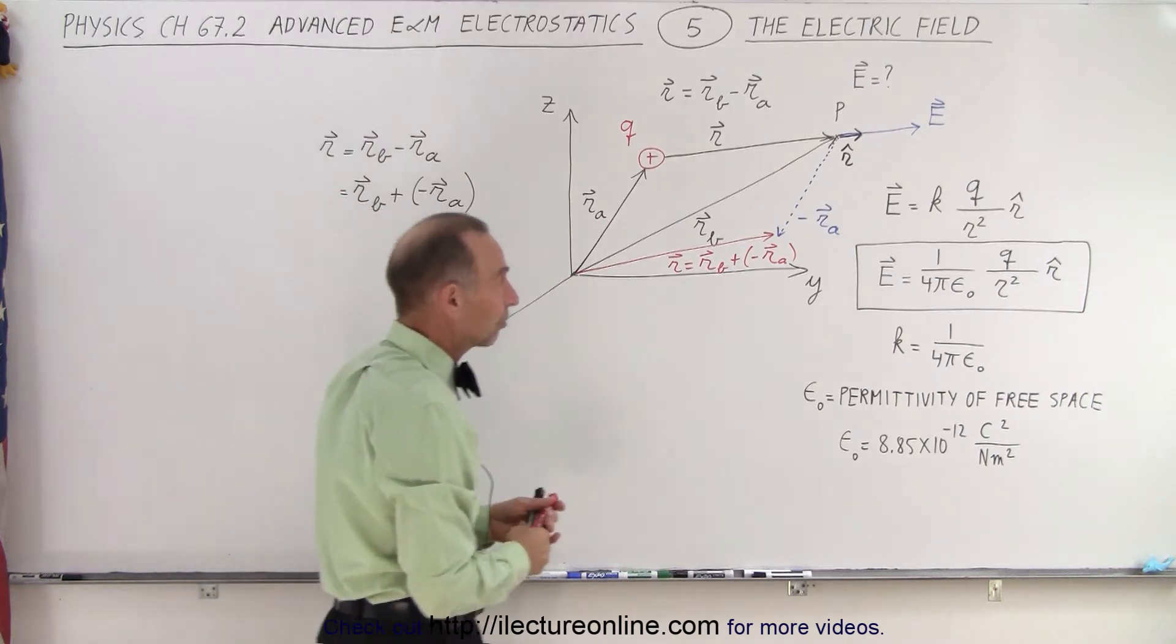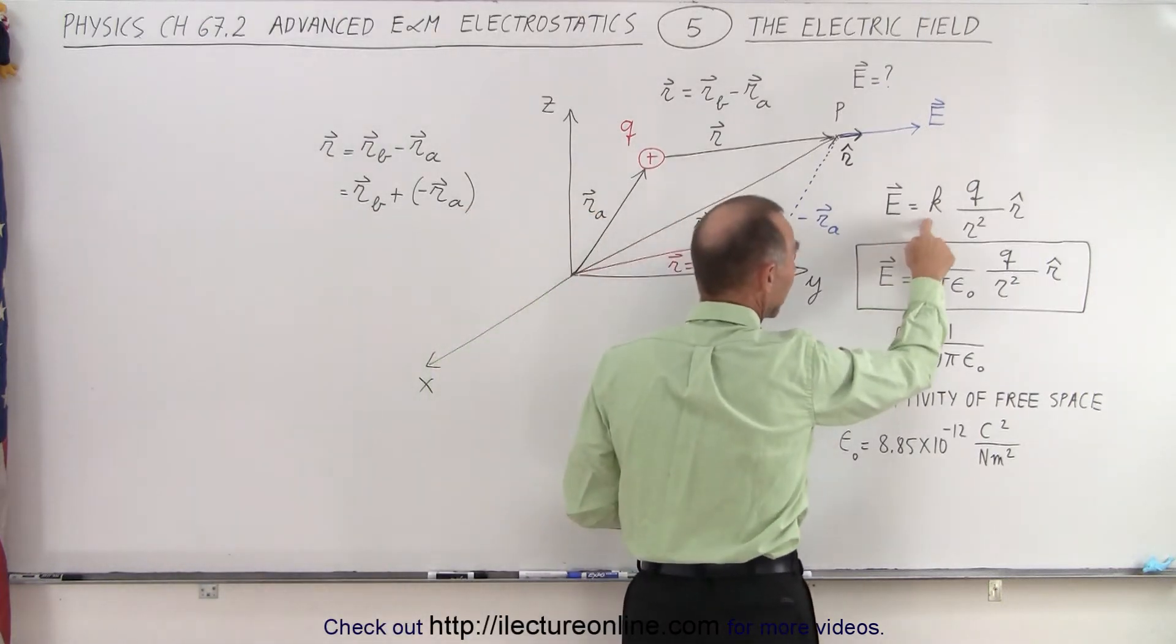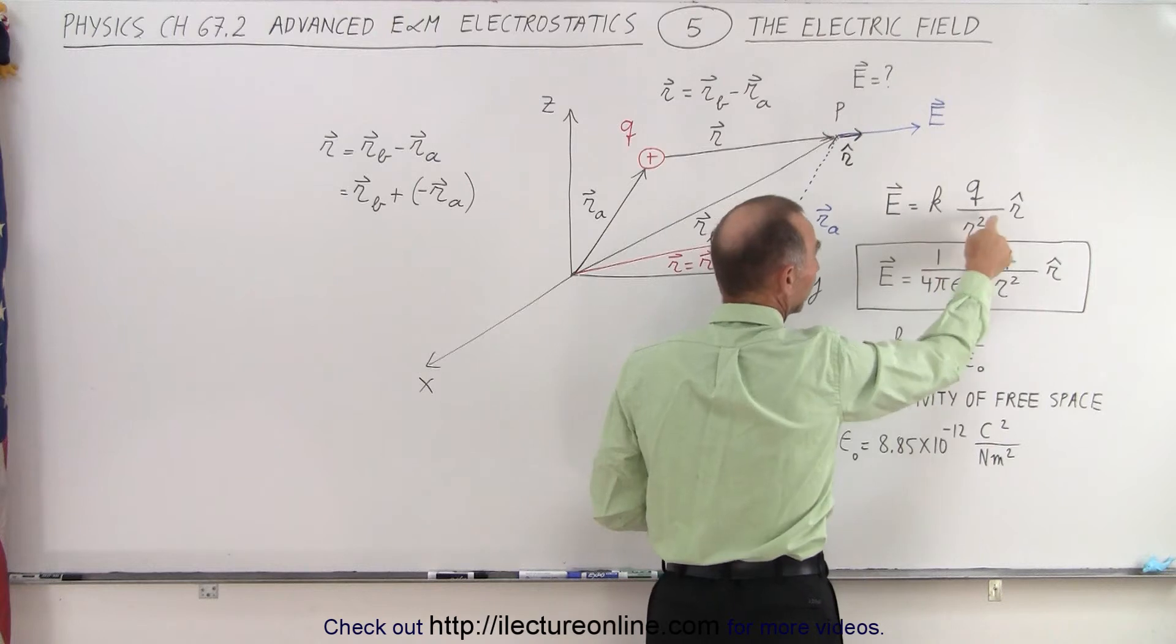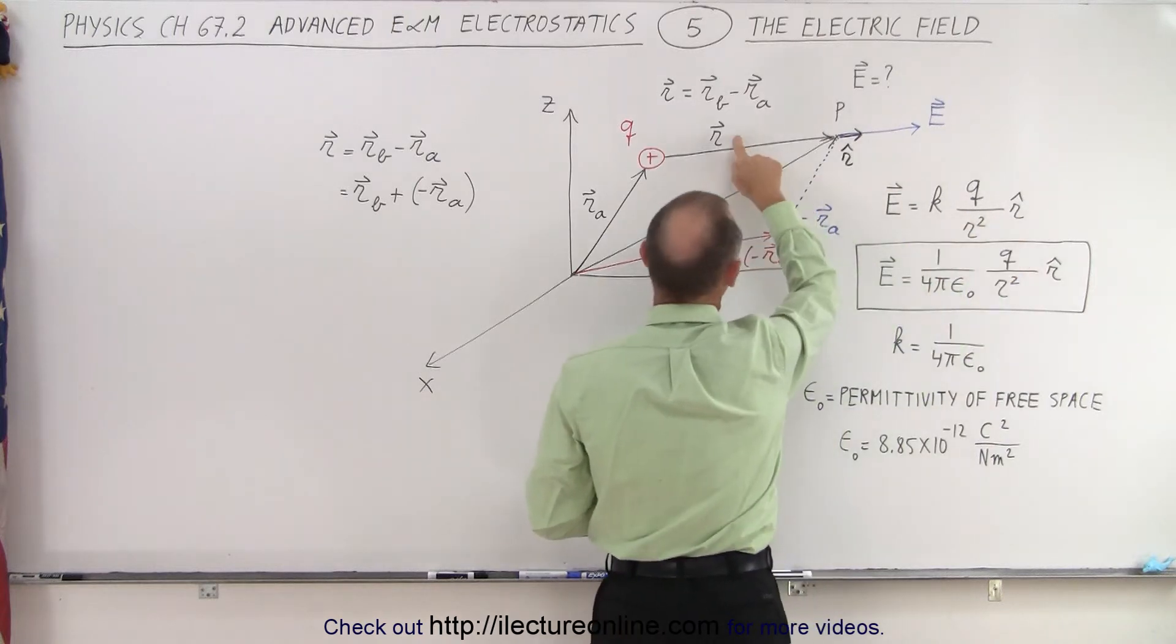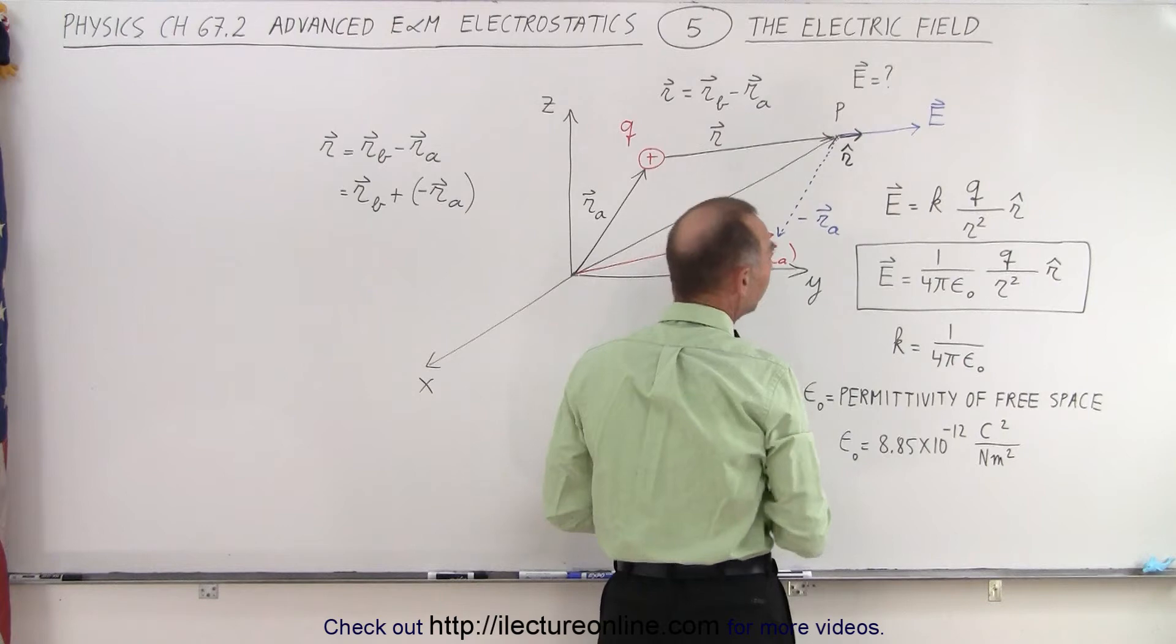To find the electric field, we know the electric field is equal to k times q over r squared in the r direction. Notice we have a small unit vector r right there.